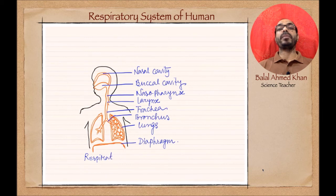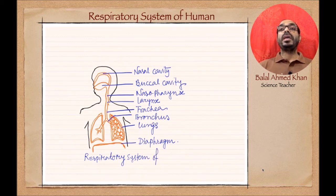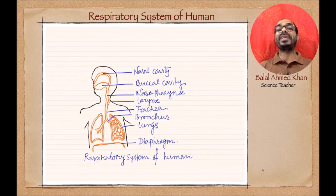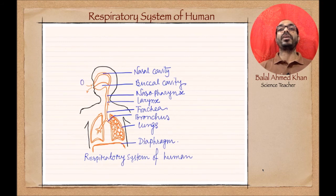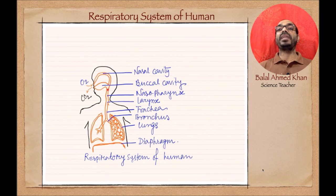From the nostril to the diaphragm, all parts are directly associated with the respiratory system. The respiratory system of humans is comparatively complicated because different organs are associated with it. The nostril is the outer opening, forming a tubular structure known as the nasal cavity. During inhalation, oxygen is received, and during exhalation, carbon dioxide is released.